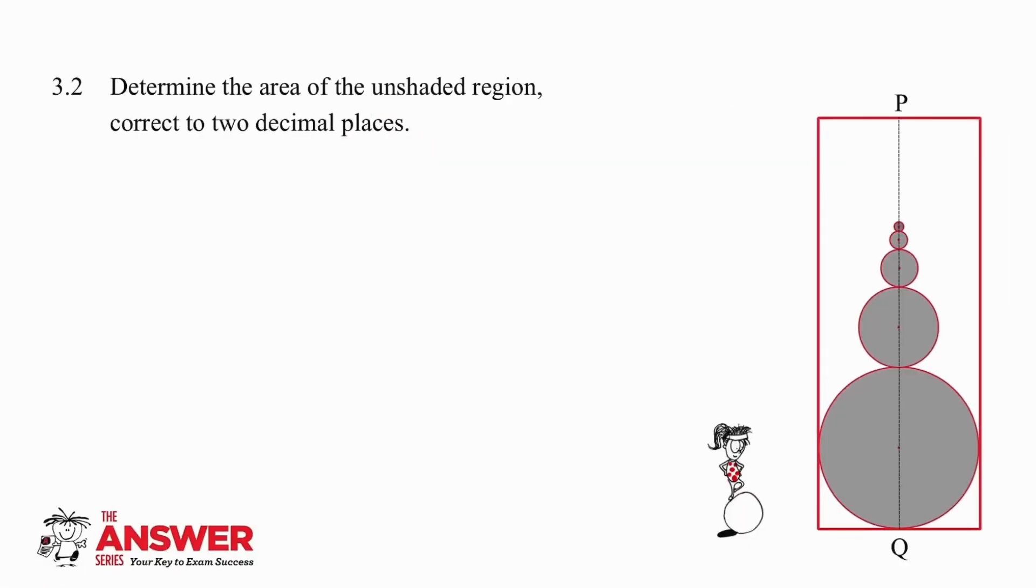The last question in this video is quite challenging. We need to work out the area of the unshaded region, correct to two decimal places. Pause the video and try the question on your own. If you got stuck, you can't answer the question directly, so try to work out the sum of the areas of all of the circles added together, as well as the area of the rectangle, and then think about what you can do from there.